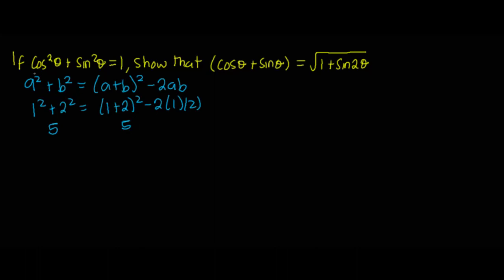So what we are going to do now is reduce the expression cos²θ + sin²θ using this property of algebra. To do that, let's assume that a is equal to cos θ and b is equal to sin θ. So what is going to happen is that cos²θ + sin²θ...